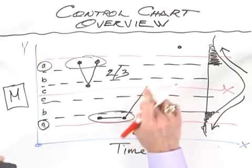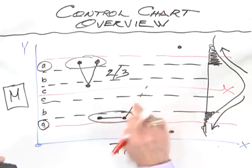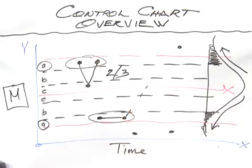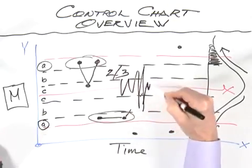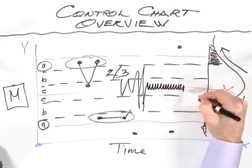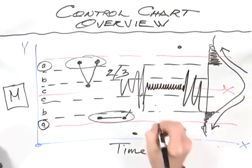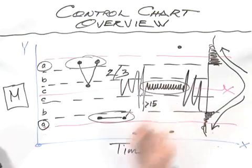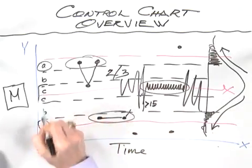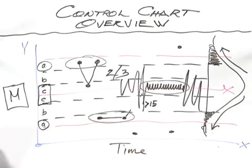The other test which relates to this is almost the converse. It's when you get too much data bunching around the center. We would have data that are random, and then all of a sudden 15 data points in a row hug the center line, and then break out again.